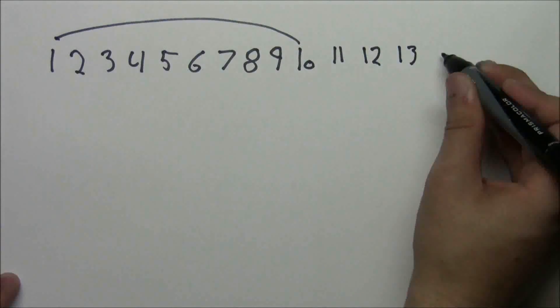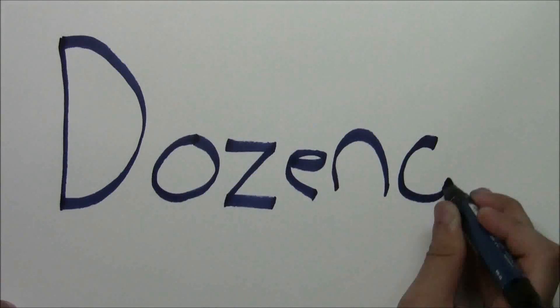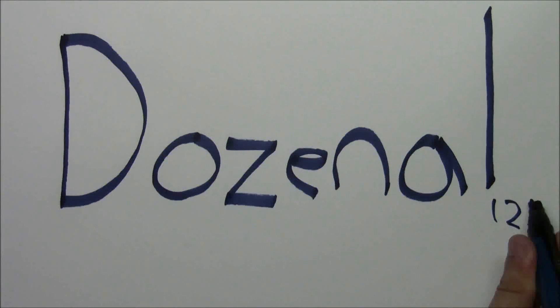But what if I told you that there was a better way to count? In fact, much better. Allow me to introduce you to the beauty that is the dozinal system, which is base 12.